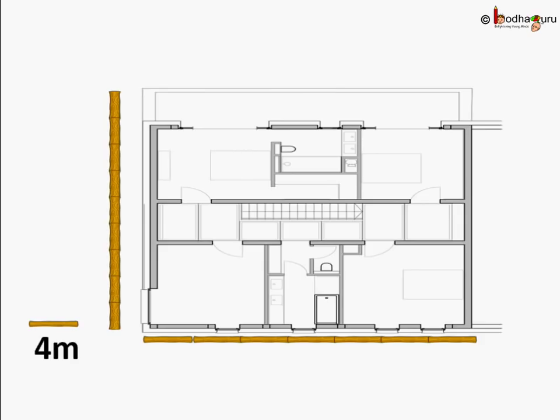How can a map tell us the distance between two places? To know that, you have to know how a map is made. Aman made the map of his house. One line or stick means 4 meters. So the length of his house is 9 sticks, which means the length is 9 into 4, equal to 36 meters.